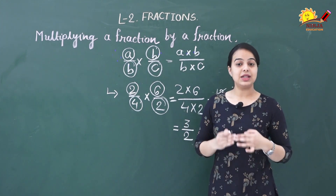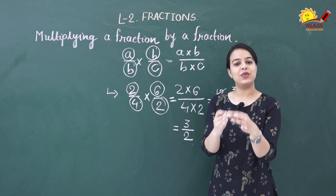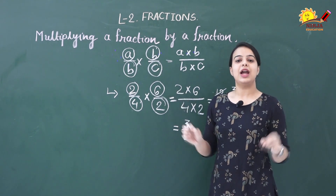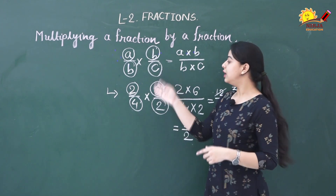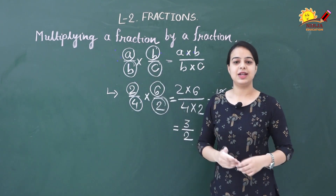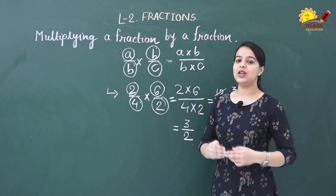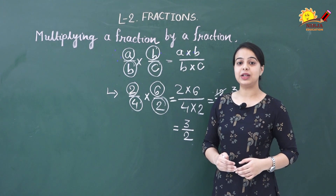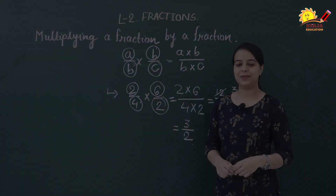Let us quickly recall how to multiply fractions. We pick the numerators and multiply them together, then pick the denominators and multiply them with each other. This is how you can multiply any fractions together. Now let us see how to multiply a whole number and a fraction.